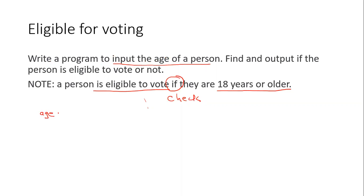So we would say age equals int input enter age. I'll put two dots and close my two brackets. So write a program to input the age of the person. The input is now done.